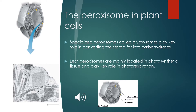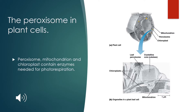The peroxisome in plant cells. One specialized peroxisome, called the glioxysome, plays a key role in converting stored fat into carbohydrates. In photosynthetic tissue, leaf peroxisomes are prominent due to their role in photorespiration. The photorespiratory pathway involves several organelles — enzymes needed are located in the peroxisome, chloroplast and mitochondria, suggesting a close relationship between these organelles.